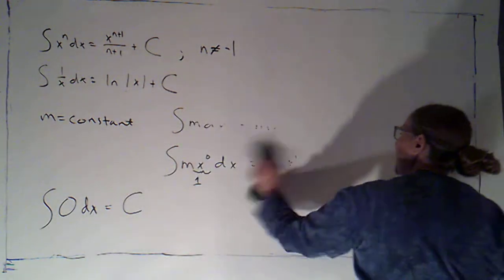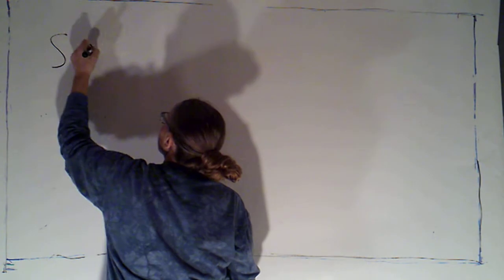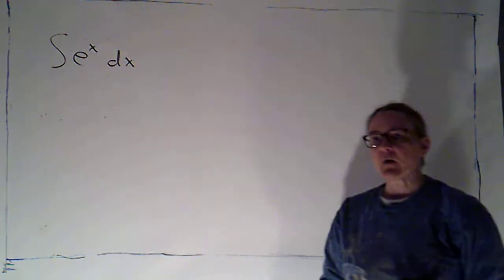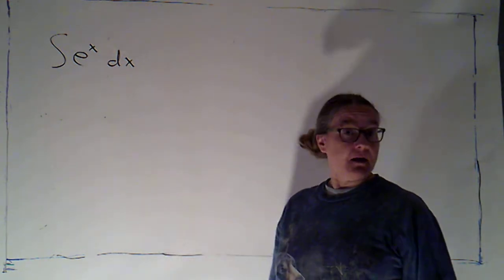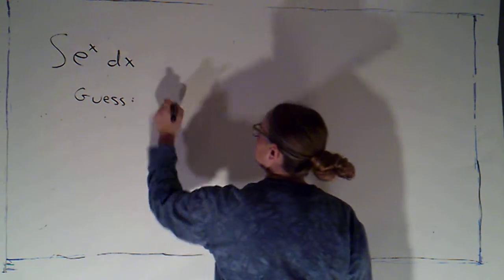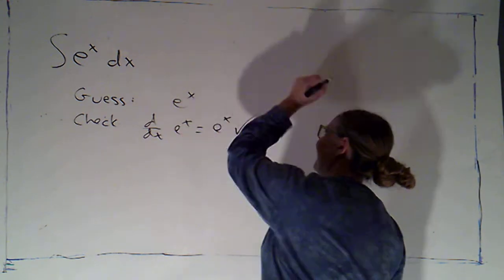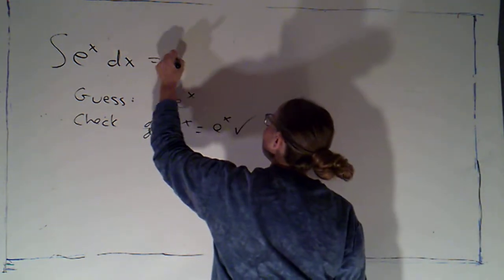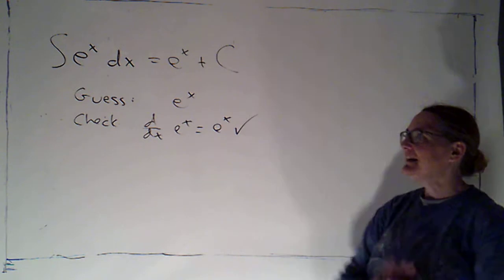Let's take a look at some exponential functions. If I wanted to integrate or find an antiderivative for e to the x, I want to think: do I know a function whose derivative is e to the x? I think I do — it would be e to the x. I'll guess e to the x and check: if I take the derivative of e to the x, I get e to the x. So if I'm integrating e to the x, I get e to the x plus c. You still have to add that plus c.